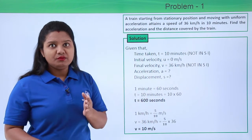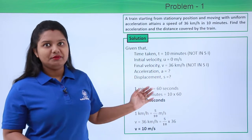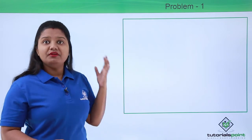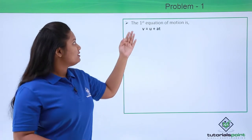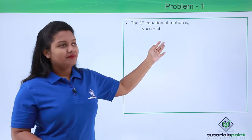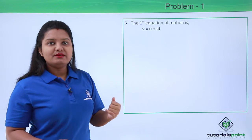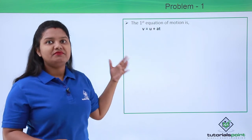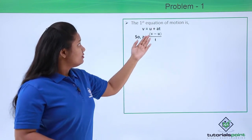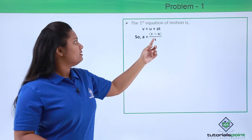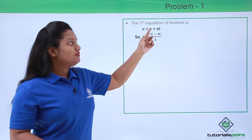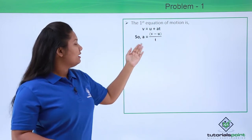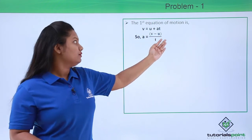Now that we have both values converted to SI, we can proceed to solve the problem. First, we will find the acceleration of the train using the first equation of motion, which is V equals U plus AT. Substituting the known values of V, U, and T, we rearrange to get A equals V minus U divided by T.